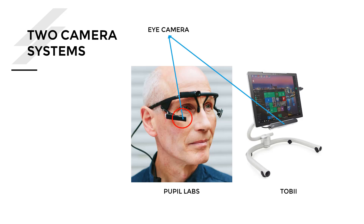It is actually a two-camera system. In one frame we are looking at the scene camera or the screen, and then there is another camera looking at the person's eyes. That is how we are going to find what the person is looking at. There is a small camera looking at the person's eye, and in the screen-based system, another camera looking at the person's face.